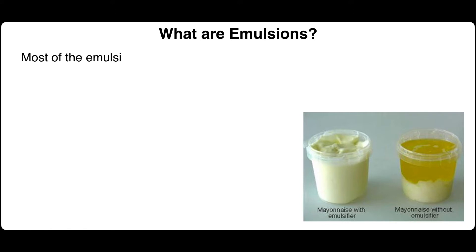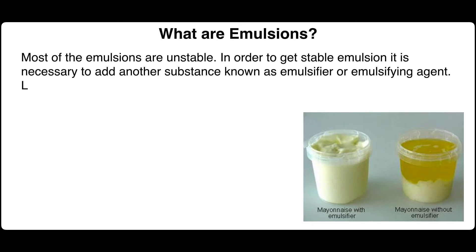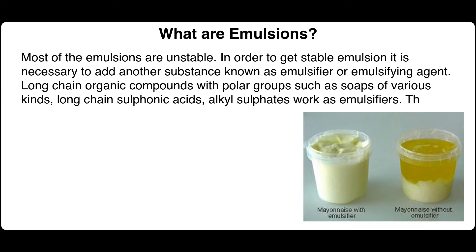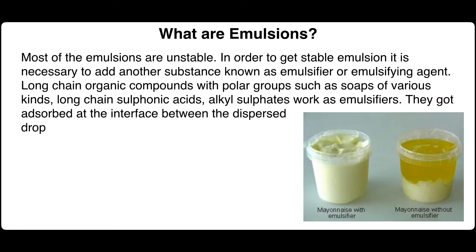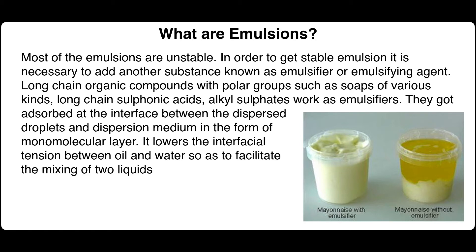Most emulsions are unstable. In order to get a stable emulsion, it is necessary to add another substance known as an emulsifier or emulsifying agent. Long-chain organic compounds with polar groups, such as soaps of various kinds, long-chain sulfonic acids, and alkyl sulfates, work as emulsifiers. They get adsorbed at the interface between the dispersed droplets and dispersion medium in the form of a monomolecular layer, which lowers the interfacial tension between oil and water to facilitate mixing of the two liquids.